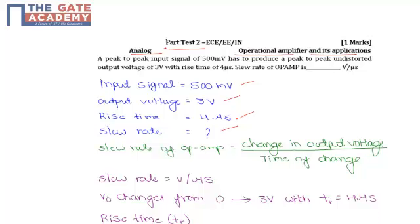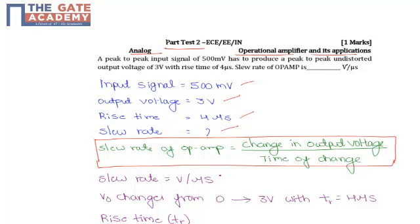Slew rate is defined as the maximum rate of change of output voltage per unit time. Slew rate of the op-amp will be equivalent to change in the output voltage divided by time of the change, expressed as voltage per microsecond.